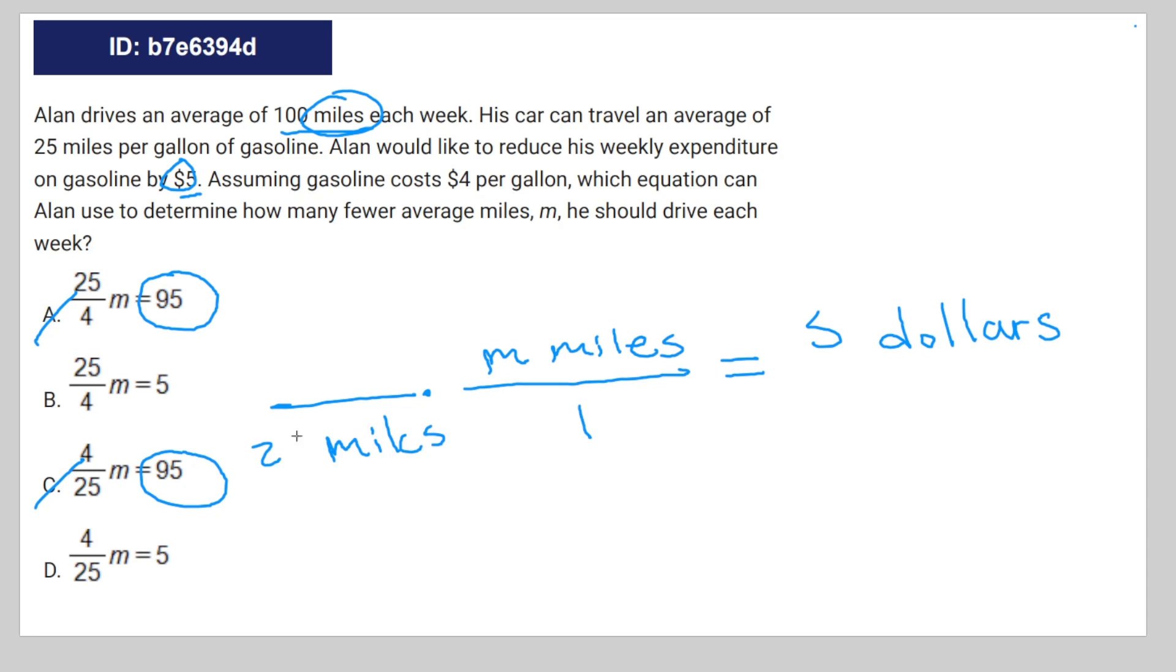And therefore it's going to be 25 miles and it's going to be $4. And they cancel out. And therefore D, 4 over 25 M is equal to $5, is the correct answer.